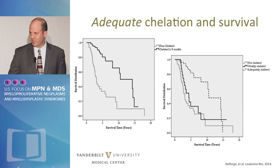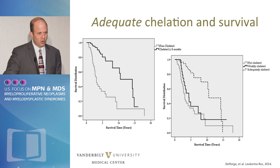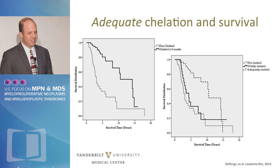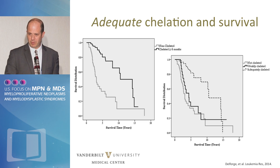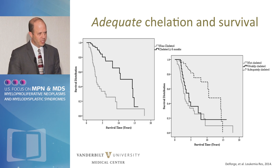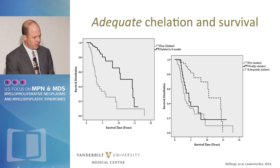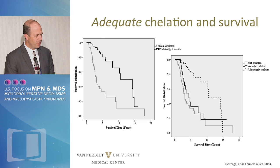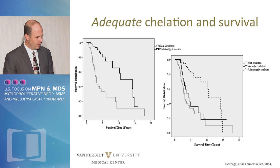Another thing that doesn't get mentioned often is not just chelation, but adequate chelation. As patients' transfusion needs grow, you have to continue to increase chelation — as I tell patients, it was 2 steps forward and 1 step back, now it's 2 steps forward and we have to avoid 3 steps back. This French analysis shows that patients who were adequately chelated did better, and patients who were weakly chelated had really no benefit over those who weren't chelated at all.